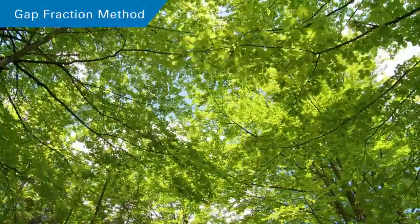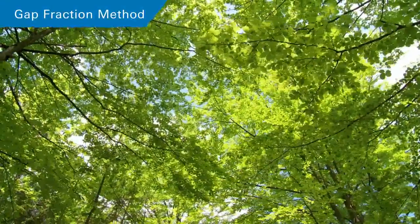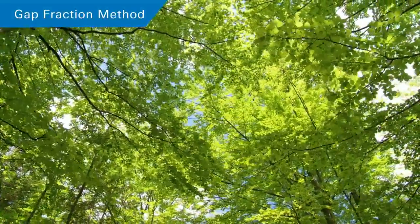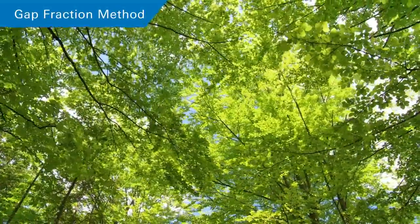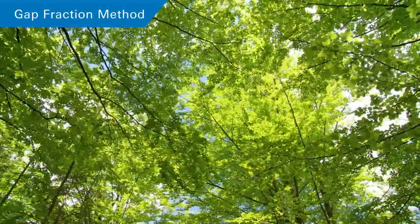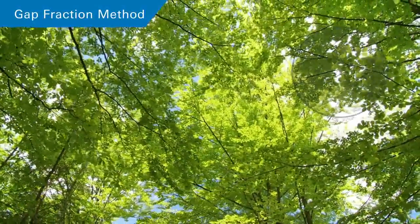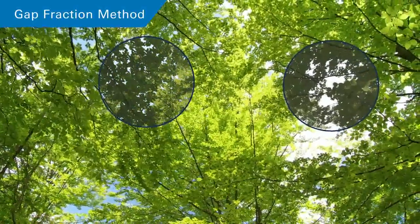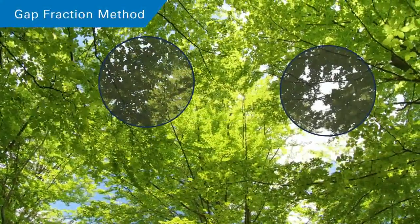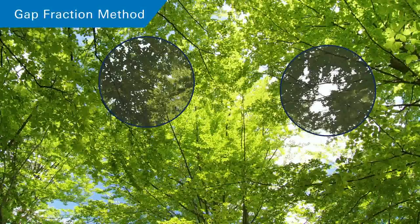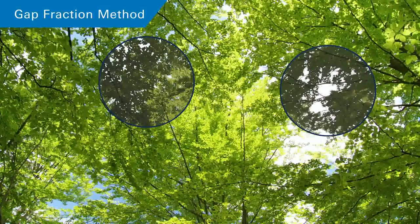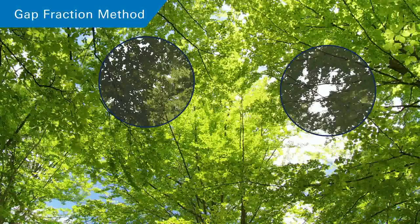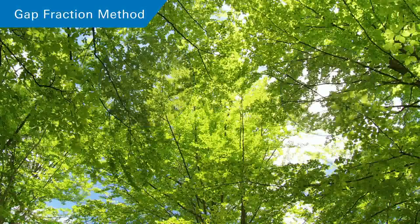The gap fraction method is the most practical way to measure leaf area without damaging the plants. Gap fraction indicates how much of the sky is visible from beneath the plant canopy. If you can see more sky, the gap fraction is bigger. If you can see less sky, the gap fraction is smaller. The amount of foliage can be calculated from the gap fraction if we assume the leaves are positioned randomly within the canopy. Let's see how this works.